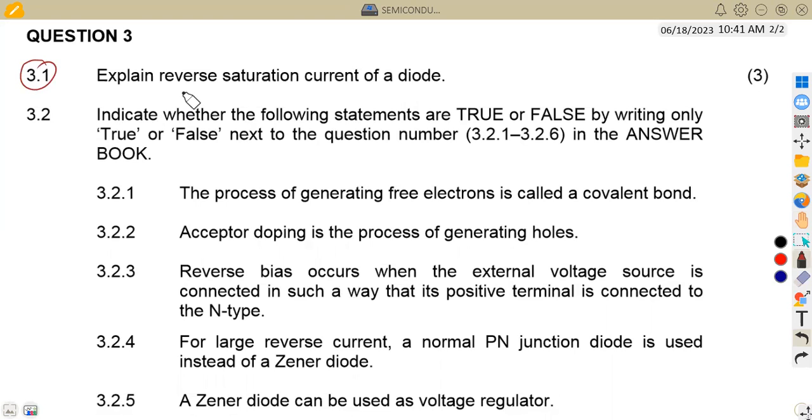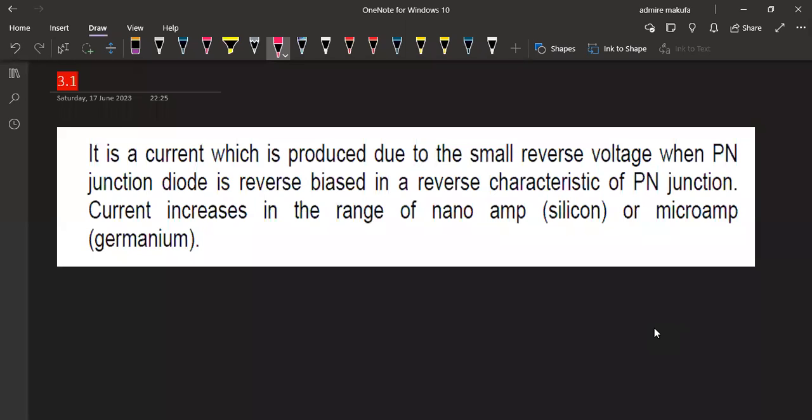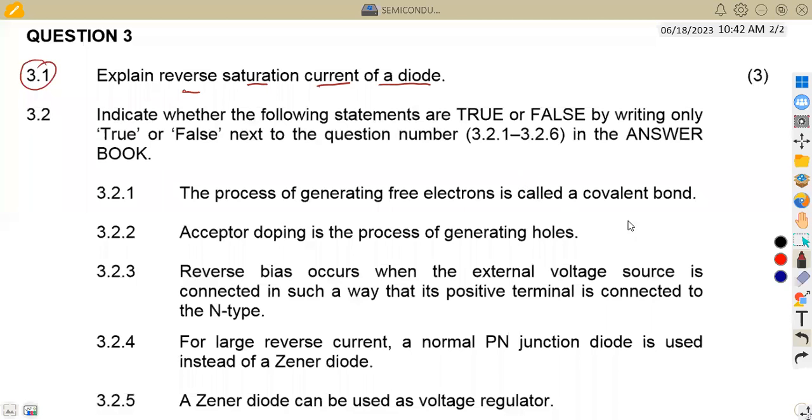3.1 was to explain reverse saturation current of a diode. We have got some of the properties that we're going to consider, that it is a current which is produced due to the small reverse voltage when PN junction diode is reverse biased. In a reverse biased characteristic of a PN junction, the current increases in the range of a nano-amp for silicon and a micro-amp for a germanium PN junction diode. These are the properties that we are to consider when we are referring to the reverse saturation current.